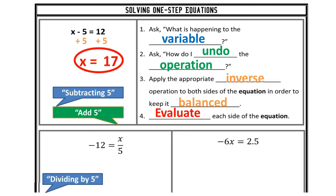My variable is all by itself. Let's try a couple down at the bottom. Negative 12 equals x divided by 5. What's happening to my variable? I'm dividing by 5. How do I undo that? I'm going to multiply by 5 on both sides. I put my inverse operation on both sides of the equation to keep things balanced.